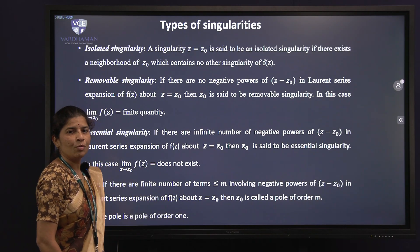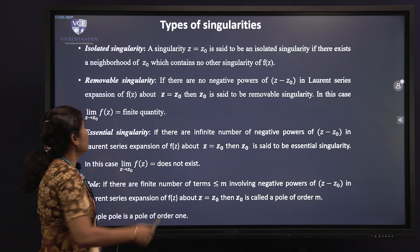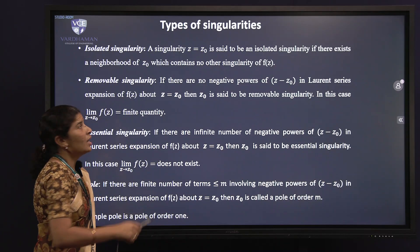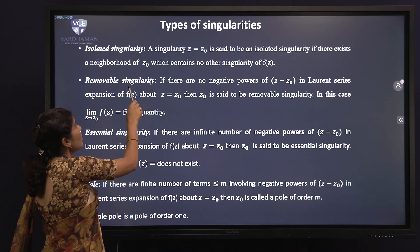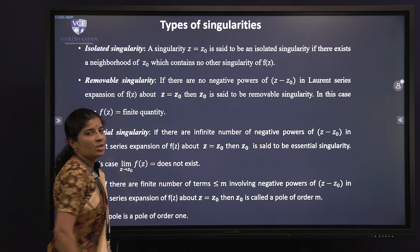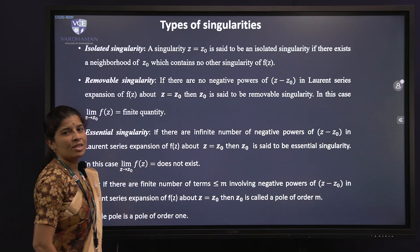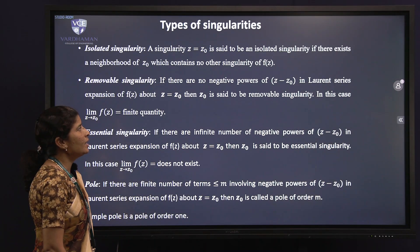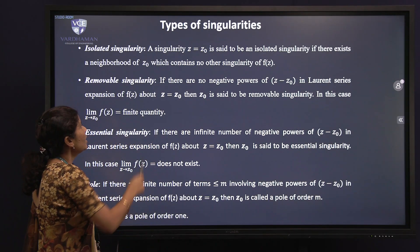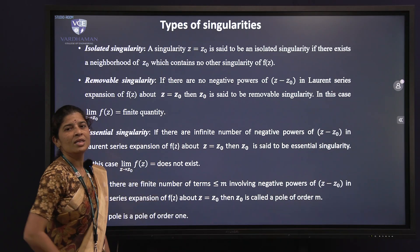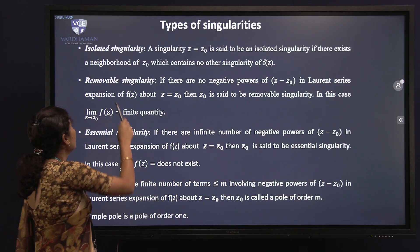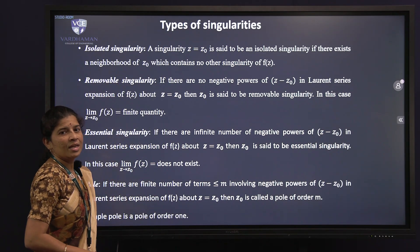Next we will discuss about the types of singularities. The first one is isolated singularity. A singularity z = z₀ is said to be an isolated singularity if there exists a neighborhood of z₀ which contains no other singularity of f(z).